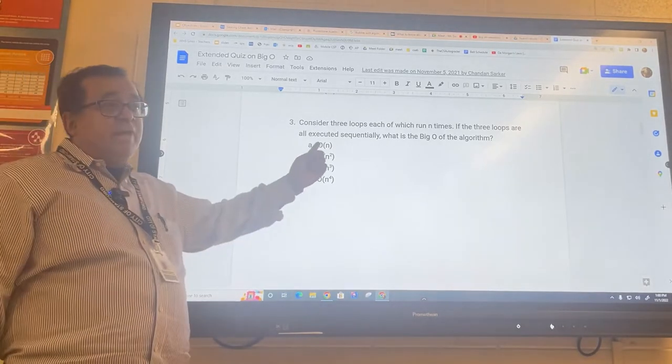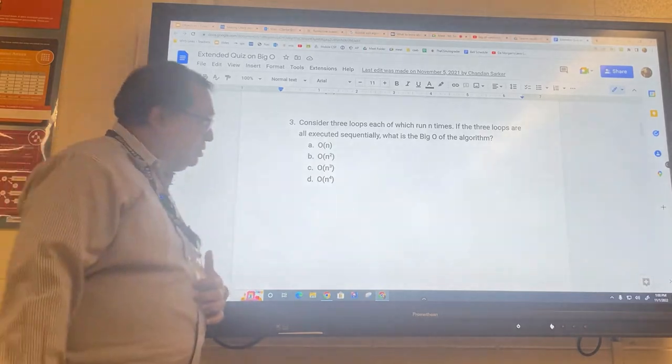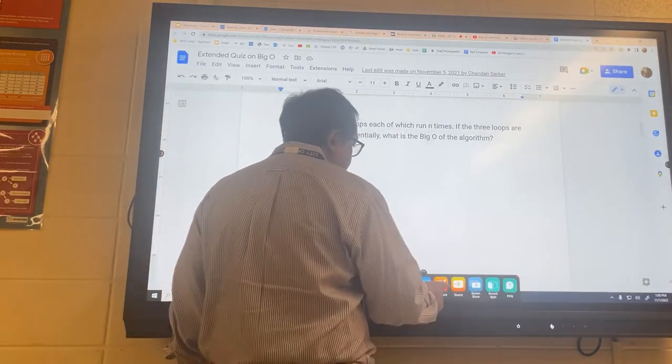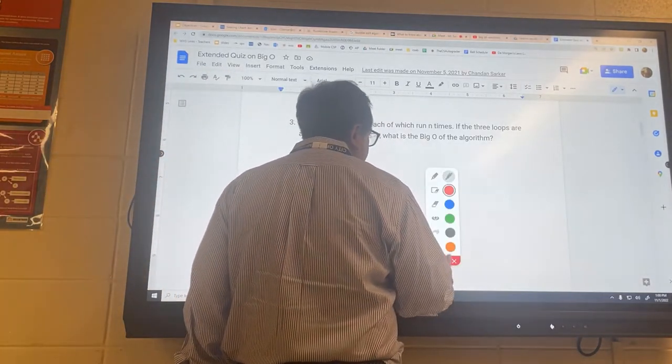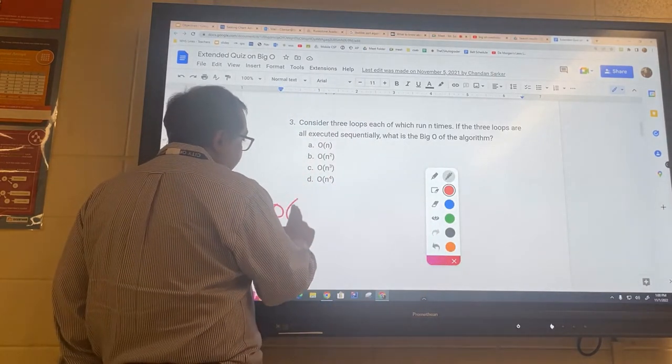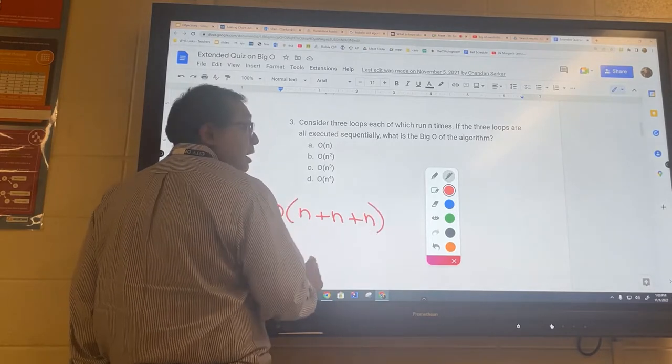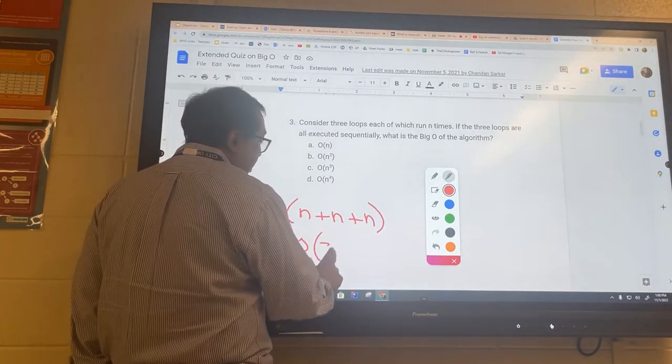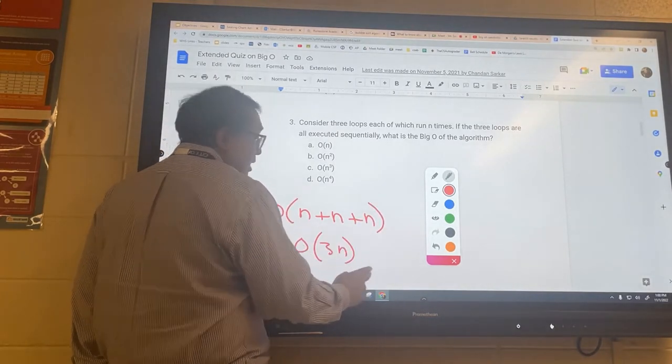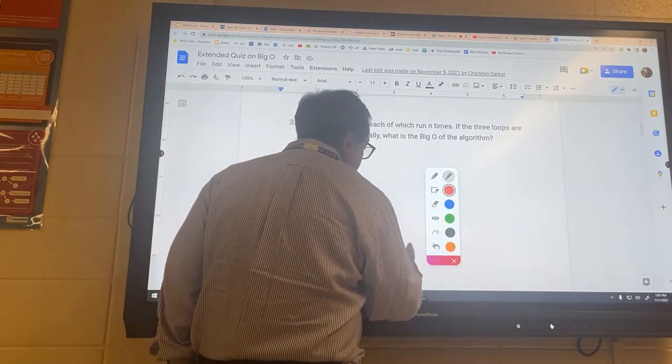It would be Big O of n. So just to be clear about this, I think you understand it, but I just want to make sure. It's going to be Big O of n plus n plus n, and it's going to be Big O of 3n, and that's going to be three times the Big O of n, and then you just ignore the three. So it becomes Big O of n.